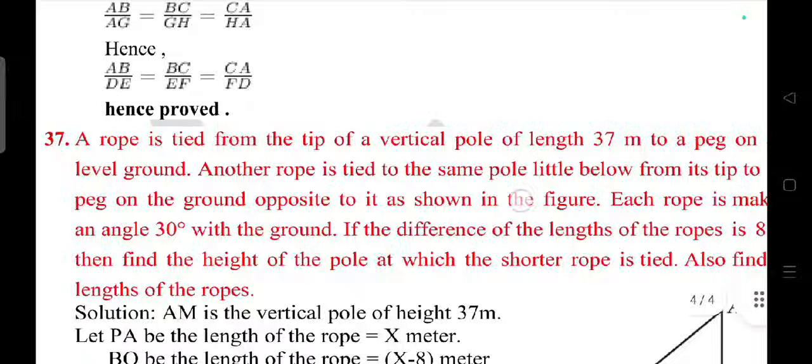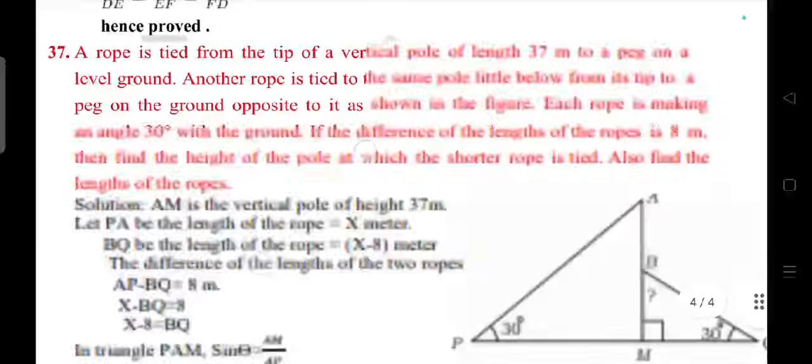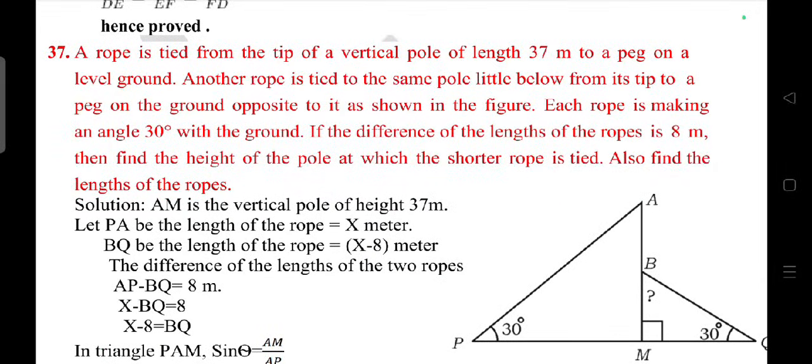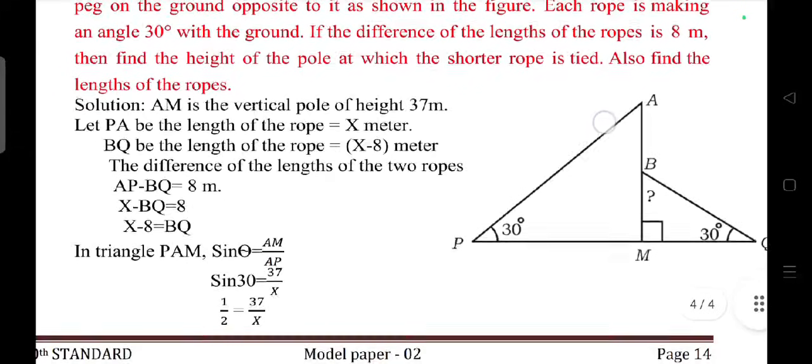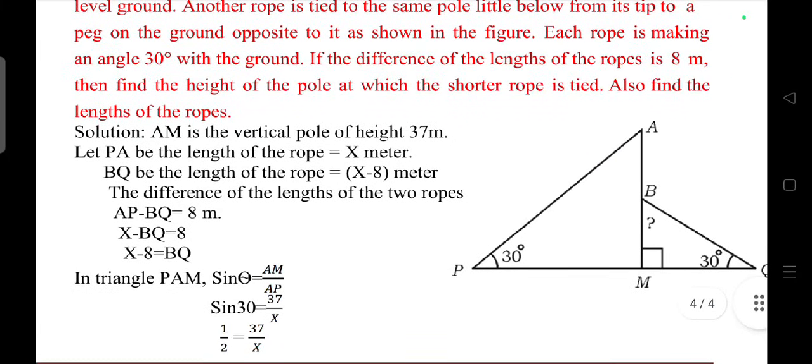Question 37: A rope is tied from the tip of a vertical pole of length 37 meters to a peg on level ground. Another rope is tied to the same pole, little below from its tip, to a peg on the ground opposite to it. Each rope is making an angle 30 degrees with the ground. If the difference of the lengths of the ropes is 8 meters, then find the height of the pole at which the shorter rope is tied, also find the lengths of the ropes. This is the answer.